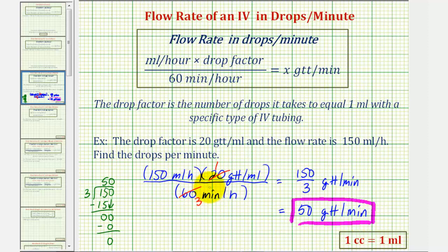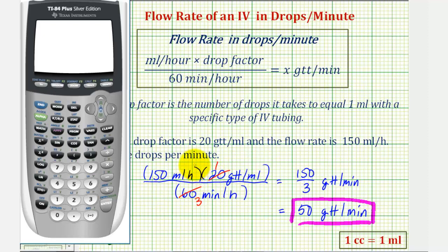Let's go ahead and check this on the calculator. Of course, with the calculator, it's not as important to simplify first. Let's verify both of these. Let's first do 150 times 20, in parentheses, and then divided by 60, which was the original set up, still 50. Or 150 divided by three, of course, is still 50.